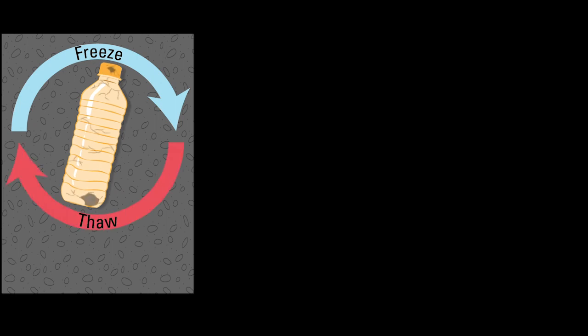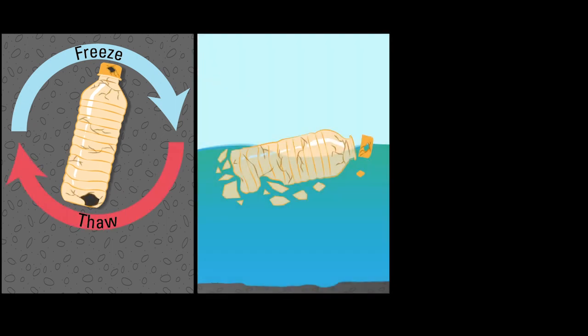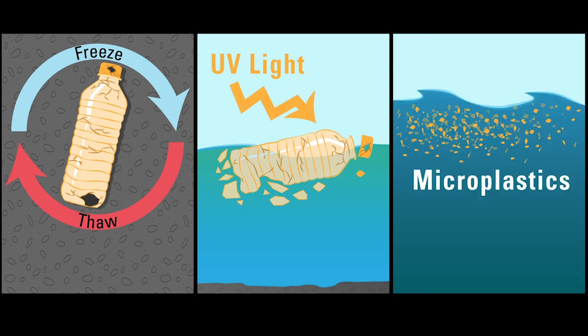An example of a chemical weathering process is weathering by sunlight. Sunlight has very powerful energy that can break up the chemical bonds of the plastic and promote that fragmentation into microplastics.